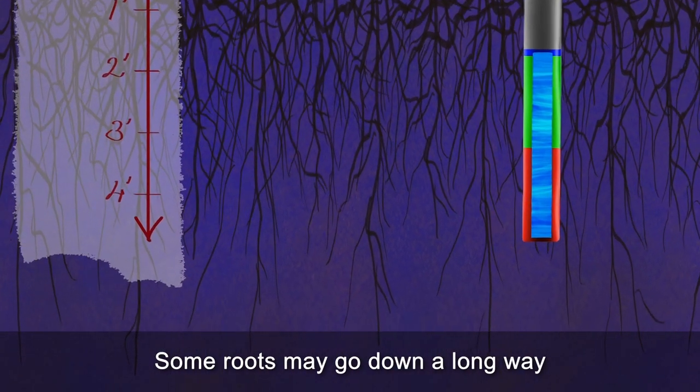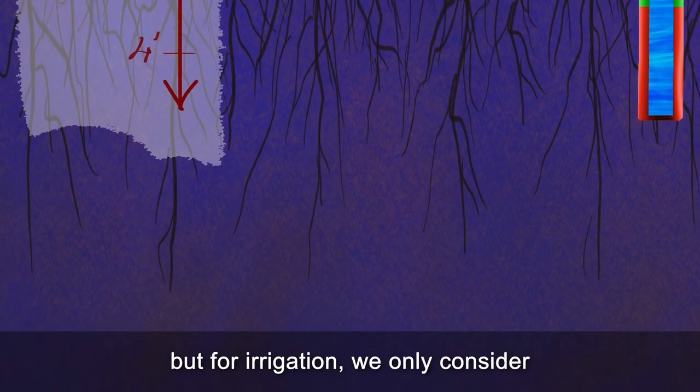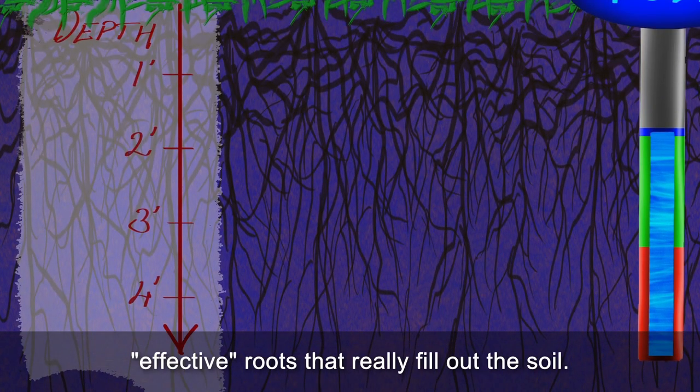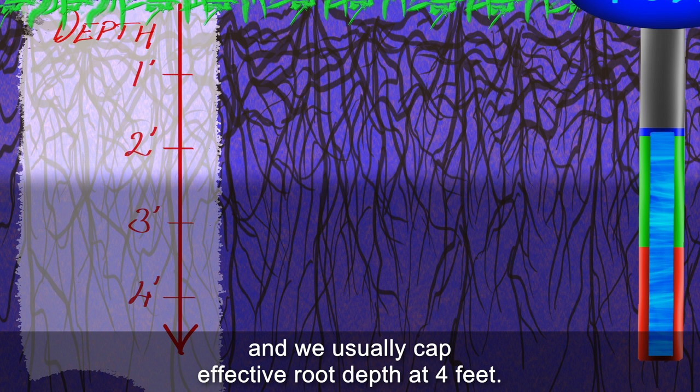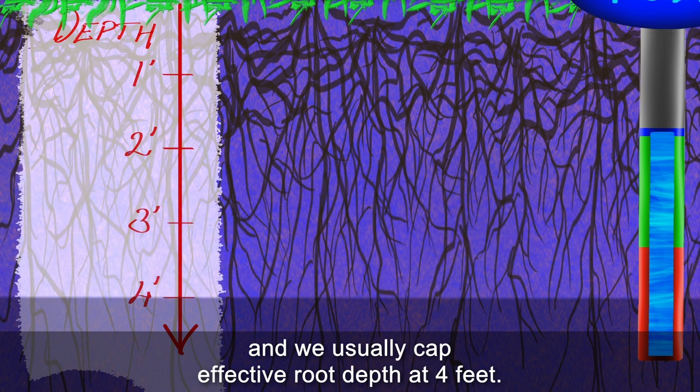Some roots may go down a long way, but for irrigation, we only consider effective roots that really fill out the soil. Most of the action is in the top layers, and we usually cap effective root depth at 4 feet.